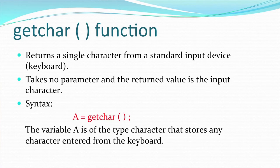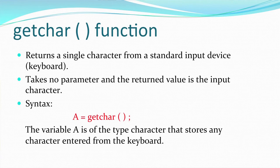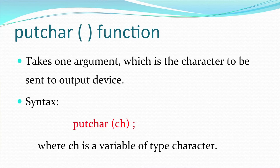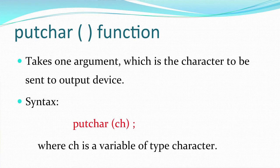getchar() is used to accept a single character from the user — it returns a single character from the keyboard and does not take any parameter. Whatever the user enters is stored in a character variable. For example, 'a = getchar()' stores the single character entered. putchar() is used to display a character on the monitor — it takes the character variable as the argument and displays it.